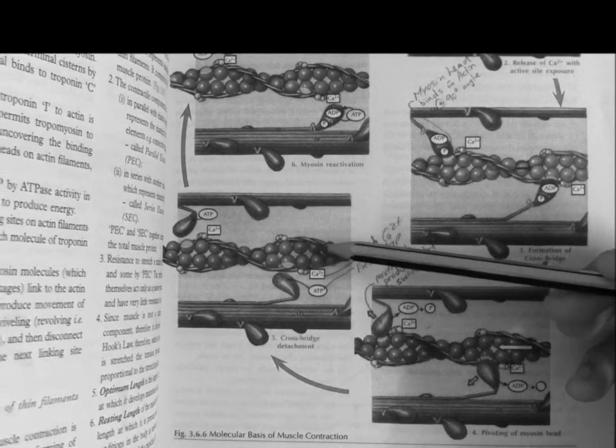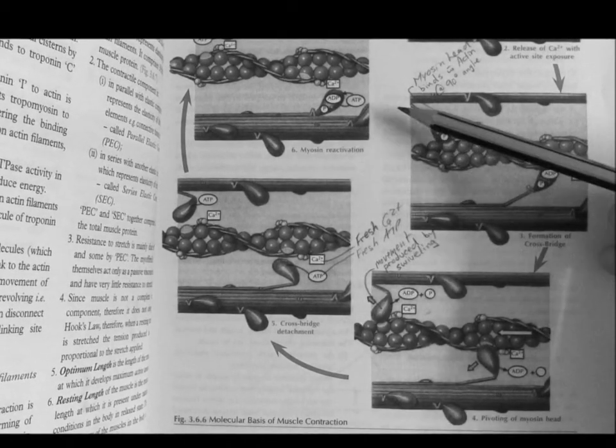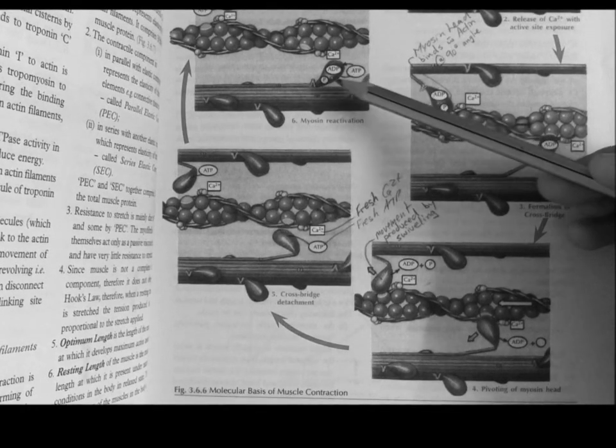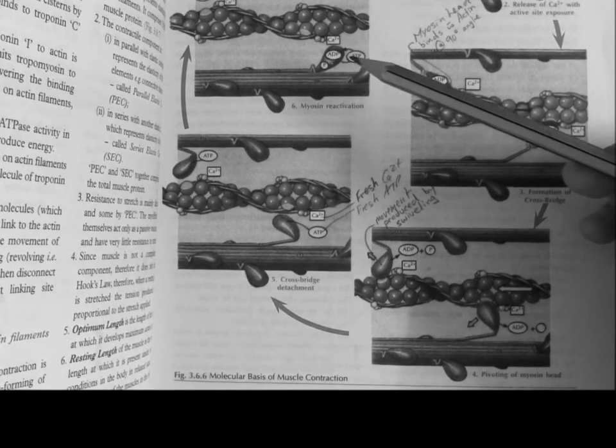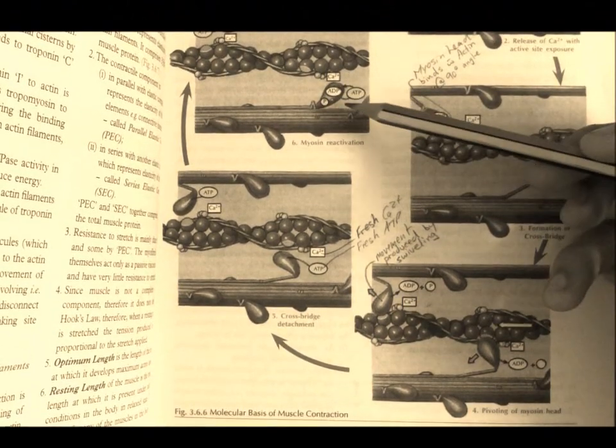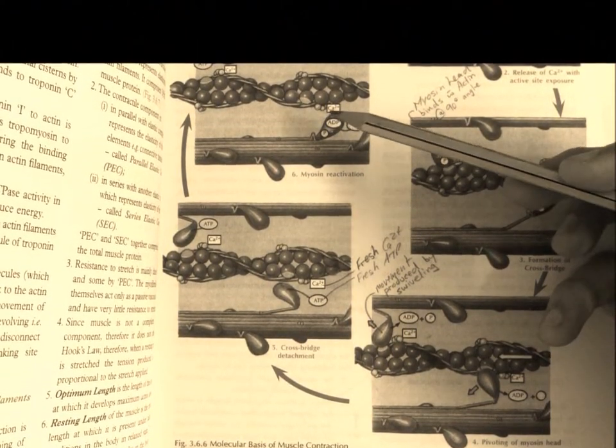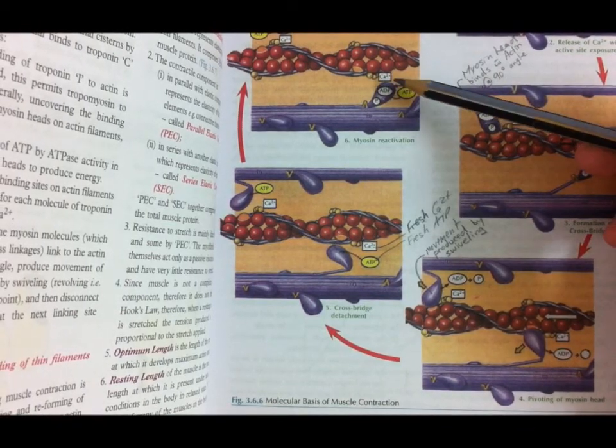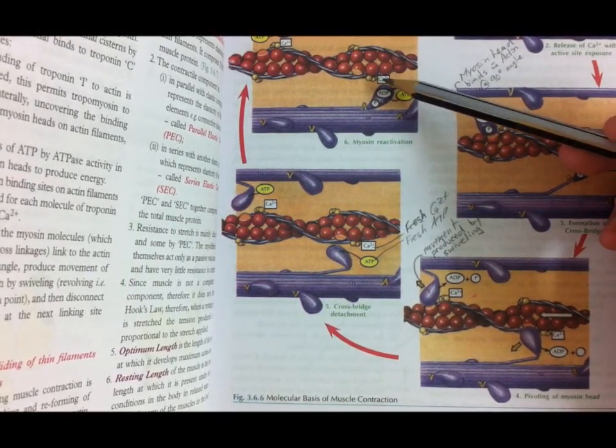Once the cross bridge is detached, myosin reactivation occurs when ATP is hydrolyzed to ADP and an inorganic phosphate. At this point, a cross bridge will reform and myosin will once again swivel. This process will continue as long as there's calcium present to bind to troponin C.